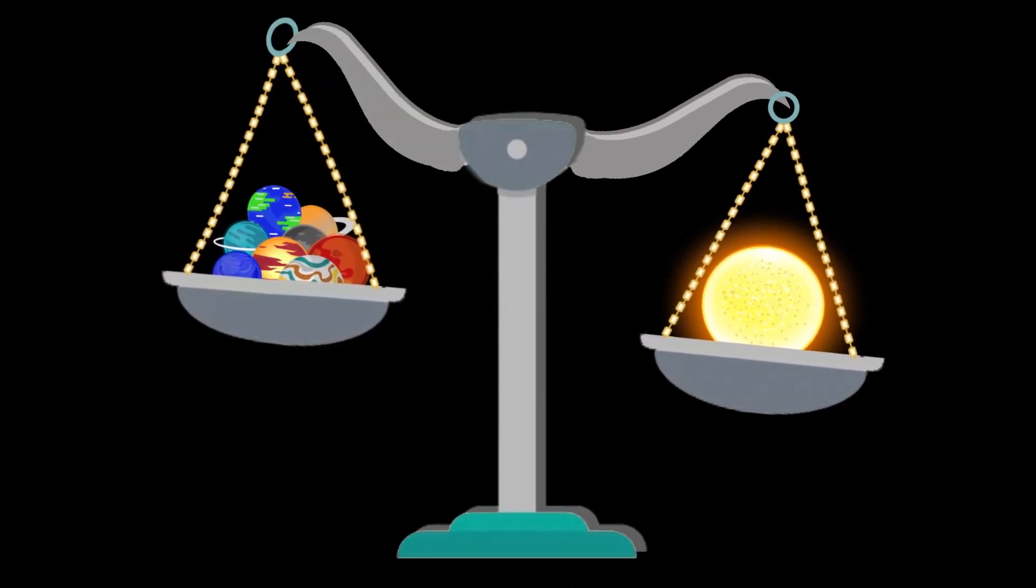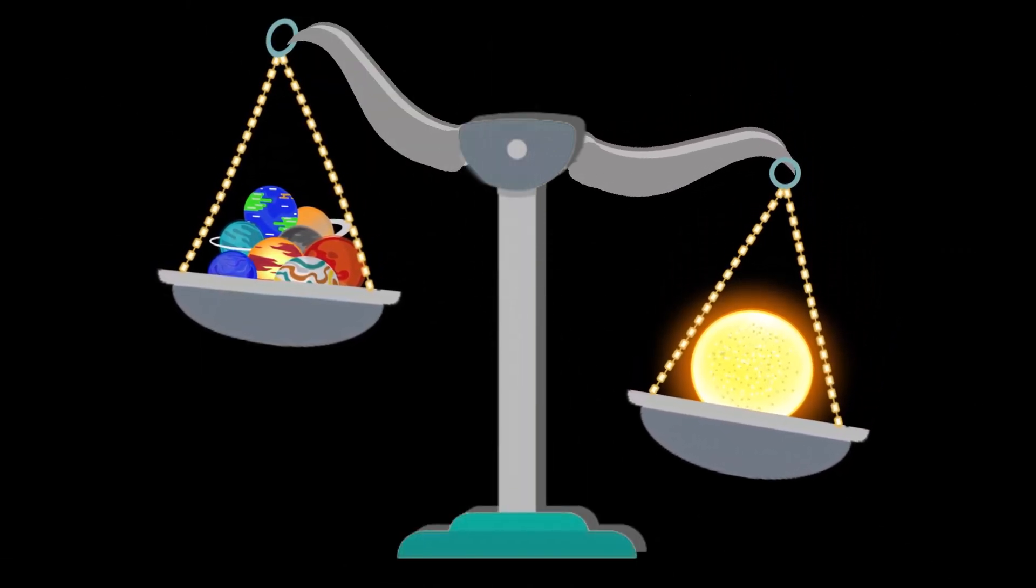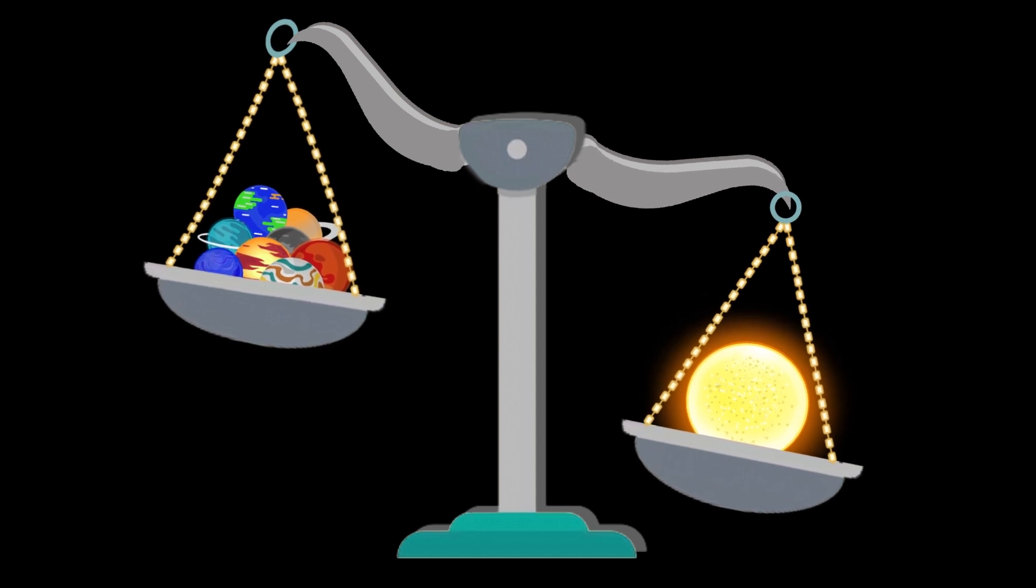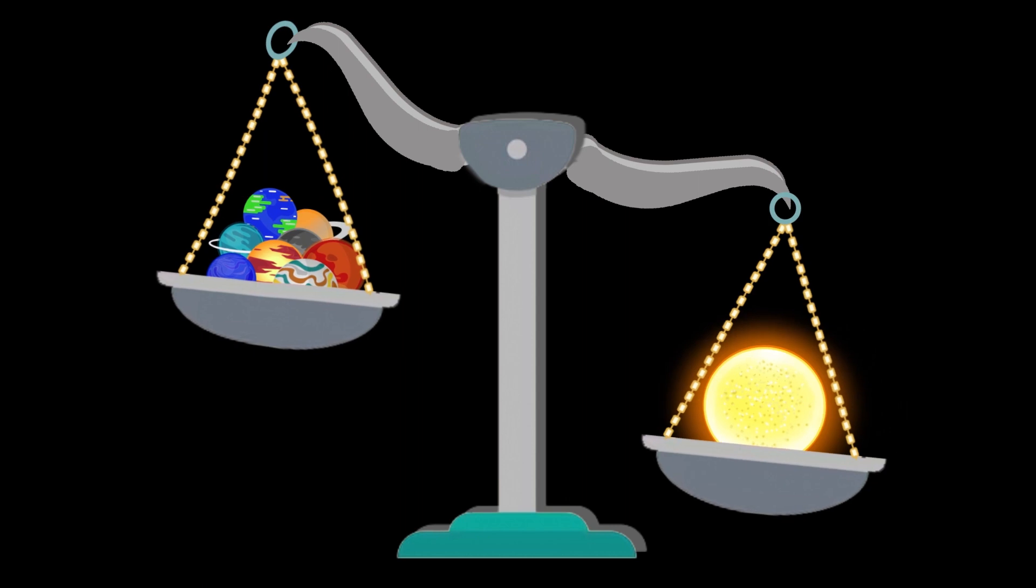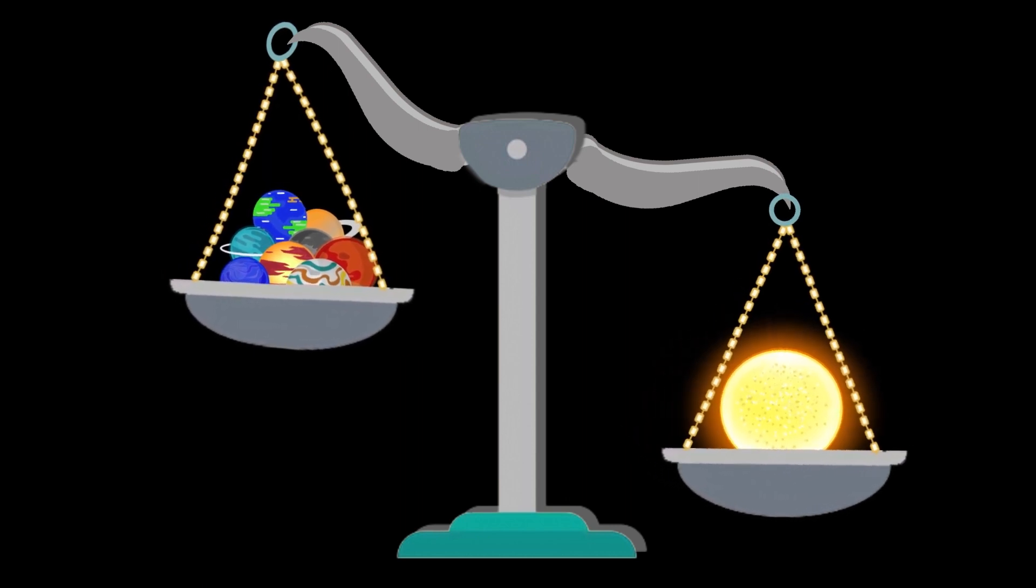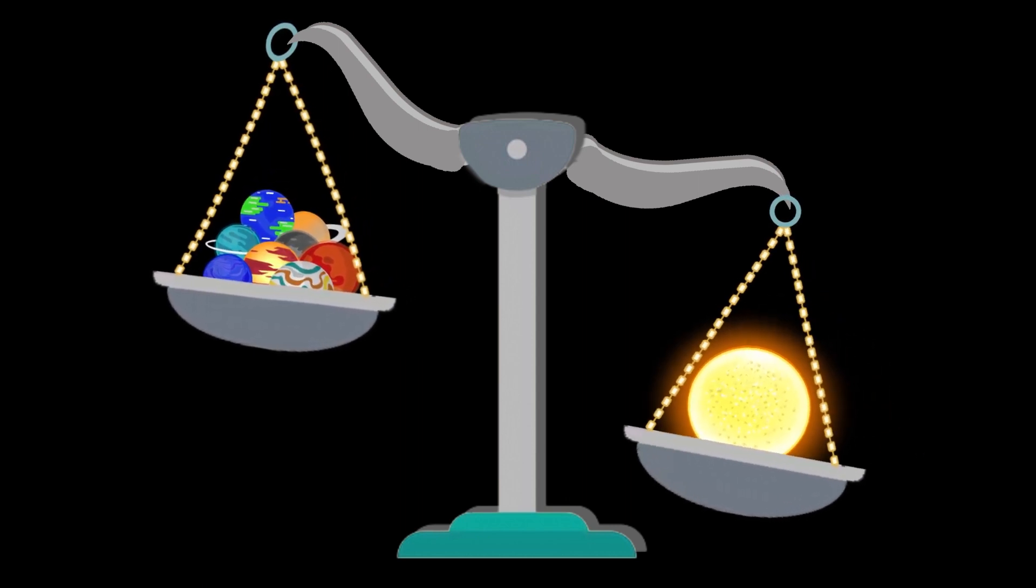The sun makes up more than 99% of the total mass of the solar system. The sun's gravity is about 27.9 times that of earth, and in a small way, it helps to control the tides on earth.